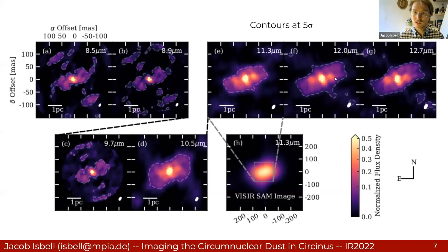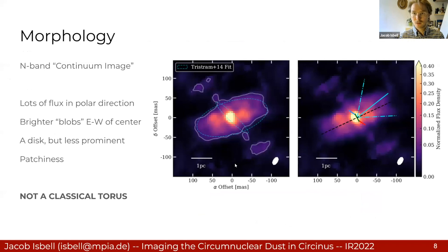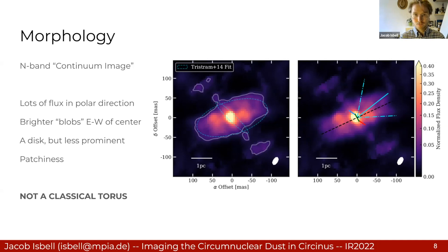For most of the talk we'll focus on the east and west flux enhancements, which are surprising results from within the polar emission. I'm going to take a flux-weighted mean of all of the continuum images to represent an N-band result. I've overlaid the Tristram et al. 2014 MIDI fit — the full width at half maximum of the Gaussians — and you immediately see how well the orientation and extension of the polar dust matches up. The orientation of the disk is a little different, but both results have a thin disk that's unresolved in the width component, so this is still consistent with MIDI.